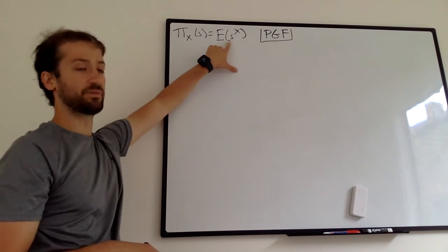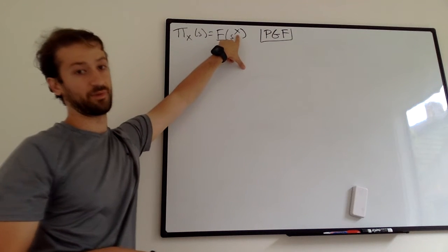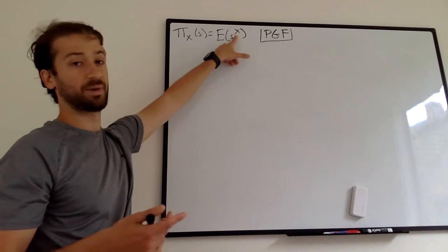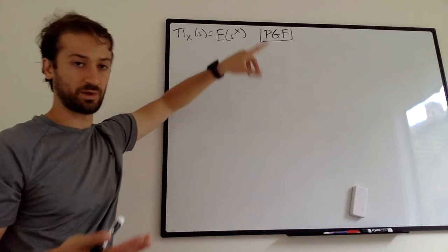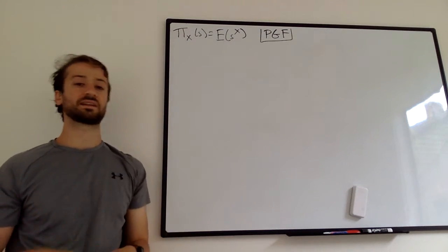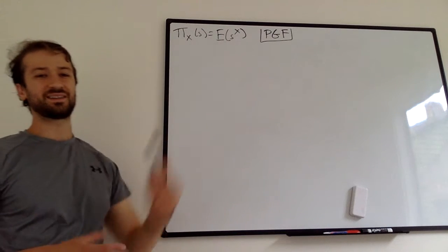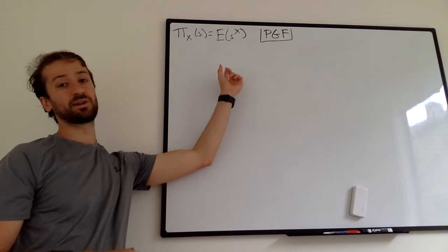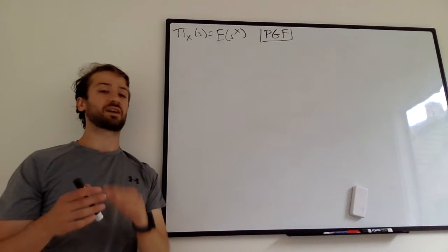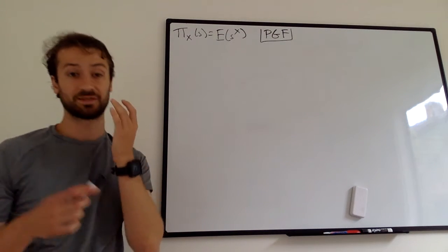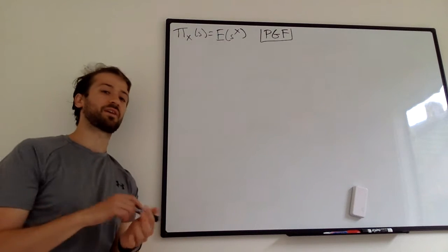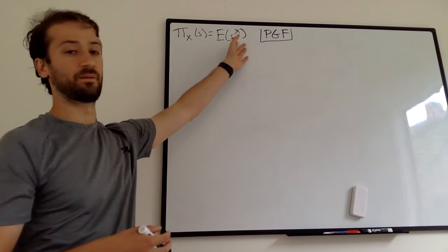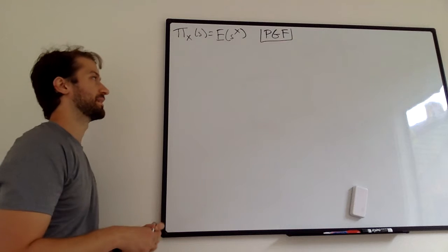The definition is the expectation of the note-keeping variable s raised to the power of the random variable X. It's a constant lowercase s to the power of a random variable X — it's a function of a random variable, so it's itself a random variable, and we take the expectation of it. Something raised to the power of a random variable is unusual. Whenever I see a weird expectation of a weird function, I like to expand it out right away using LOTUS — the Law of the Unconscious Statistician.